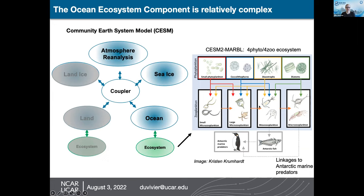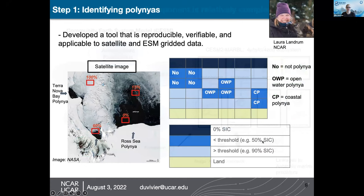Because this model is modular, you could have different combinations of plankton types, and we're investigating whether there's a better grouping. The arrows in the figure show trophic connections — who's eating who. Smaller phytoplankton are eaten by smaller zooplankton, and larger zooplankton are eaten by predators like fish or penguins, though we do not explicitly model fish and penguins in the CESM.